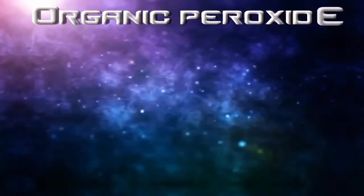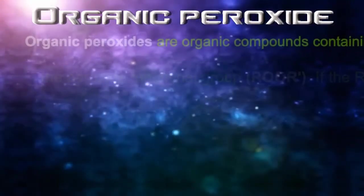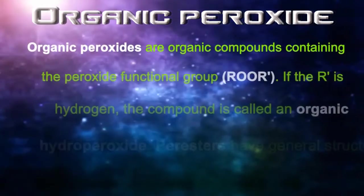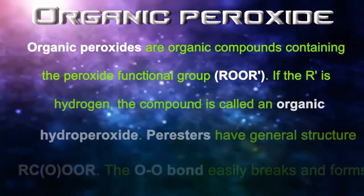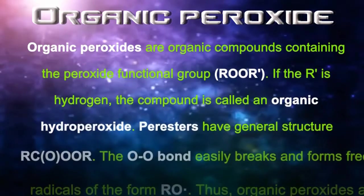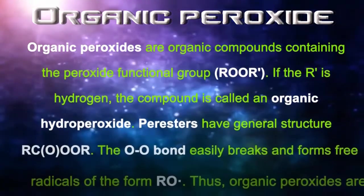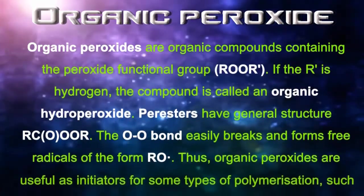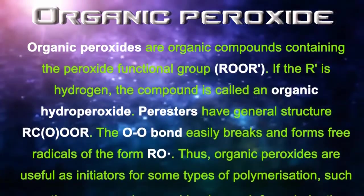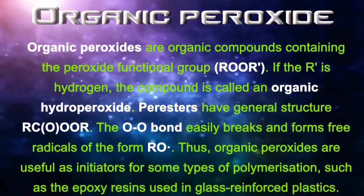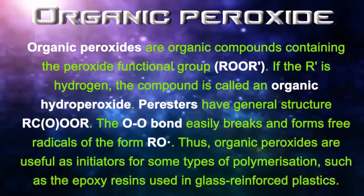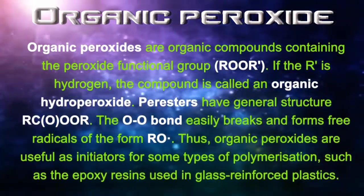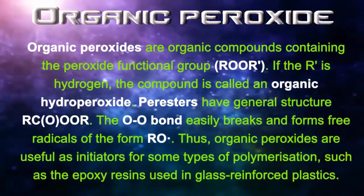Organic Peroxides. Organic peroxides are organic compounds containing the peroxide functional group. If the R' is hydrogen, the compound is called an organic hydroperoxide. Peresters have the general structure RCOOOR. The O-O bond easily breaks and forms free radicals of the form RO.